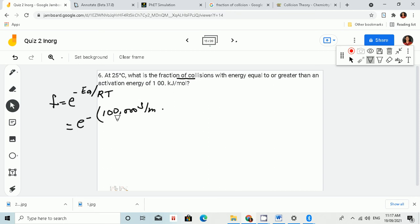That is the activation energy, and this is divided by the universal gas constant, which is 8.314 joules per mole Kelvin.